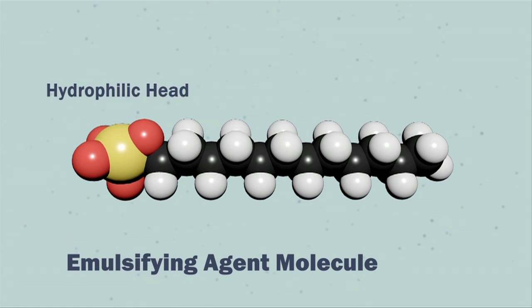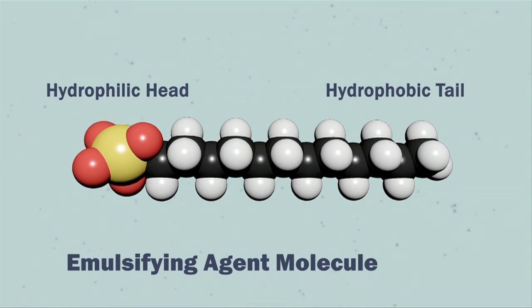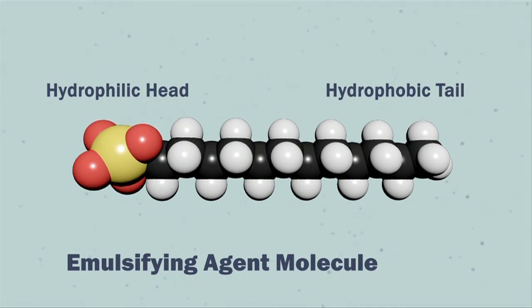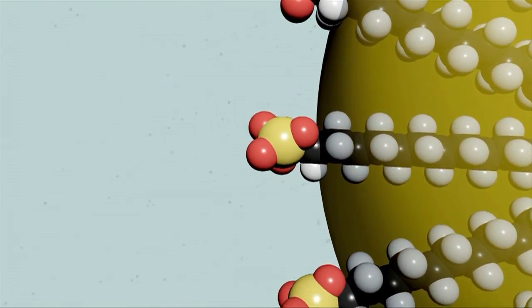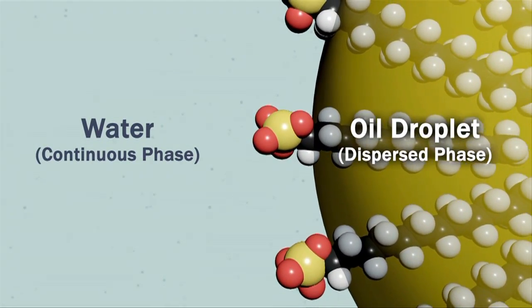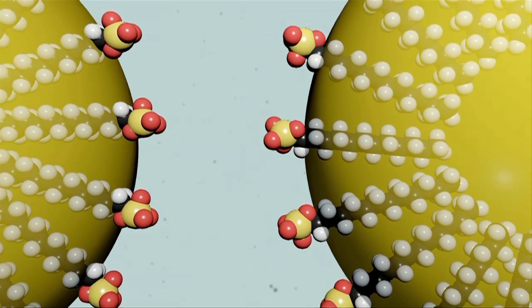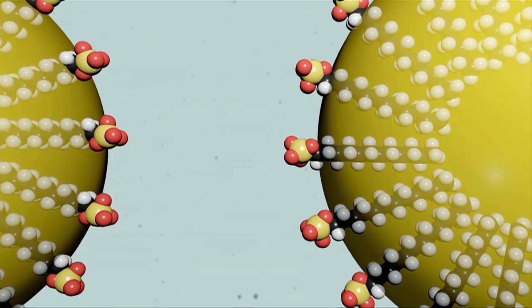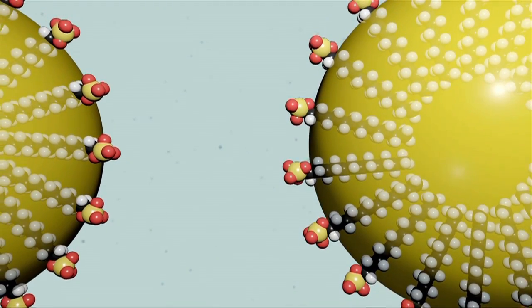Emulsifying agents are partly hydrophilic, or water-loving, and partially hydrophobic, or water-fearing. Because of this dual nature, emulsifying agents orient themselves at the interface between the water and oil phases. They reduce the surface tension and allow the droplets to remain suspended in the continuous phase and for the emulsion to be stable for a longer period.